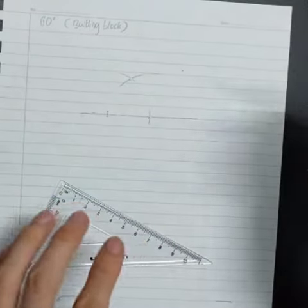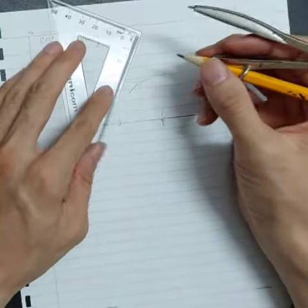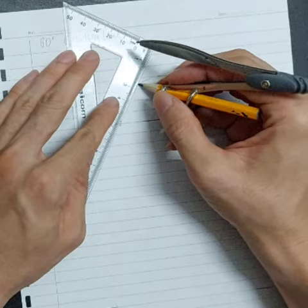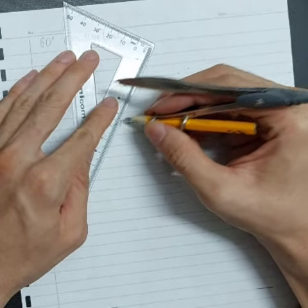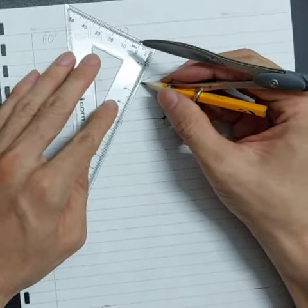All you need to do is take your ruler to connect the intersection to the middle line that you have drawn.